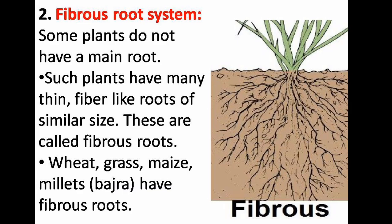In the fibrous root system, some plants do not have a main root. Such plants have many thin fiber-like roots of similar size. These are called fibrous roots. Wheat, grass, maize, and millets have fibrous roots.